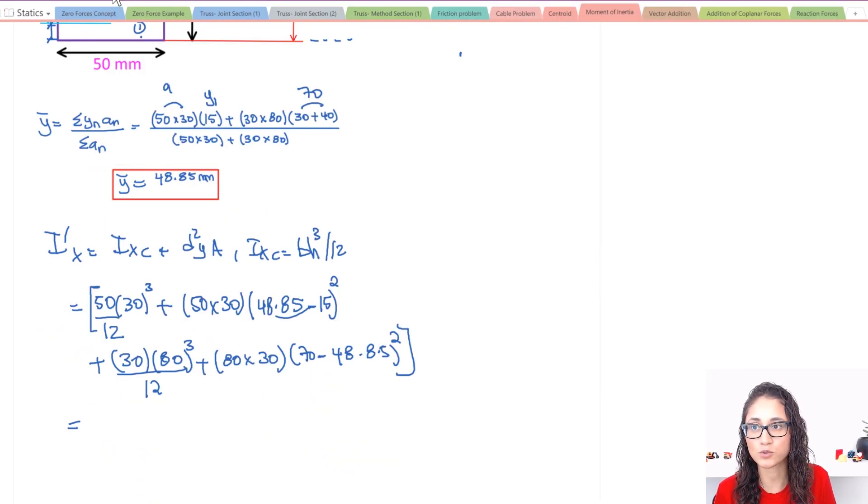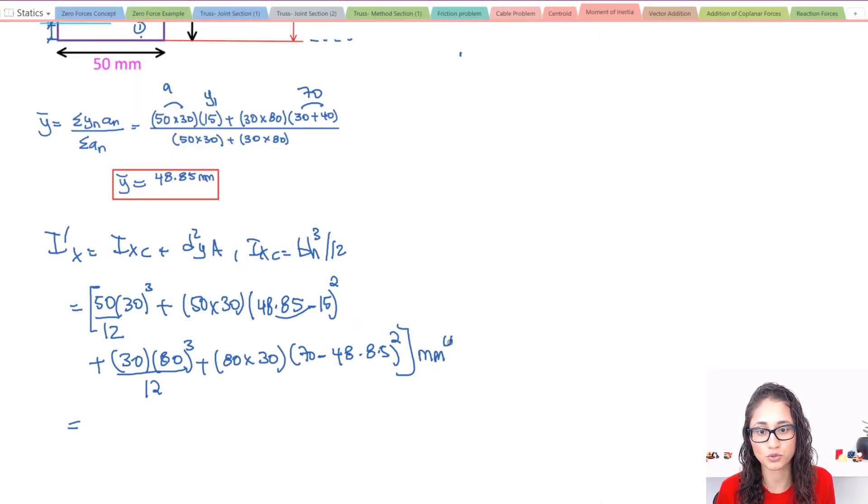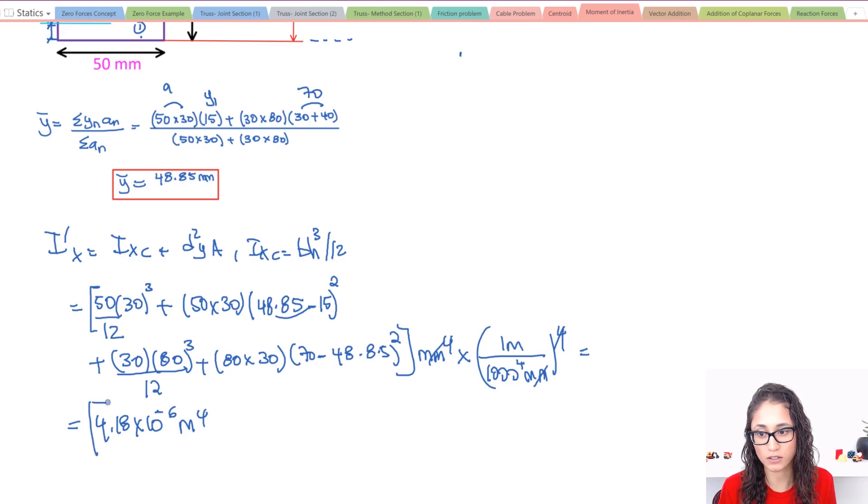So before we plug in, there's one more thing we need to do is actually convert this to meters to the fourth, because that's what the question asks. So this is what we have. I have 1000 millimeters is equal to 1 meter. Now the whole thing has to be to the power 4 so my units cancel and I'm left with meters to the fourth. So don't forget to raise this term right here to the power 4. It's very important. So if you plug in all this, you will get 4.18 times 10 to the power of minus 6 meters to the fourth, and that should be your answer.